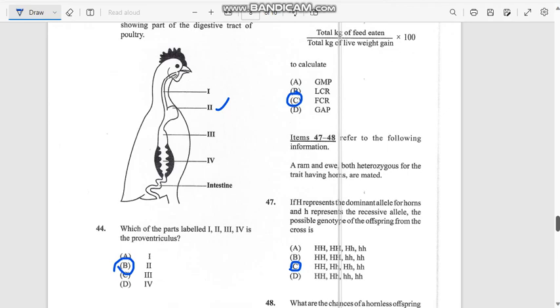Number 44: Which of the parts labeled is the proventriculus? This is wrong, it's not here. Number two right here is the crop. The crop would be three, guys. Don't worry about this, I'll get you the answer.